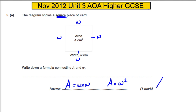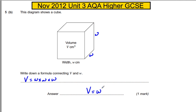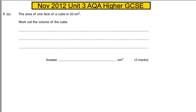For one easy mark. The diagram shows a cube — write down the formula connecting the volume with W. If it's a cube, each side is W, and the volume would be the width times the depth times the height, so the volume would be W times W times W, or W cubed.